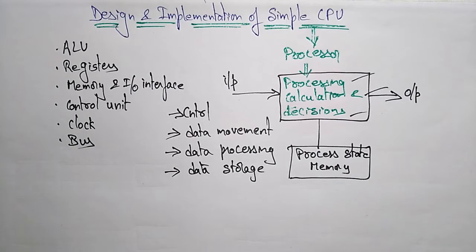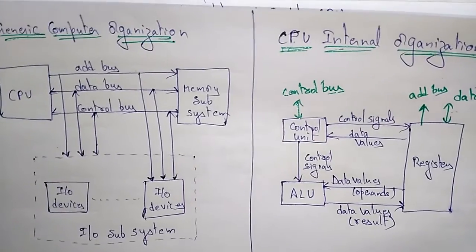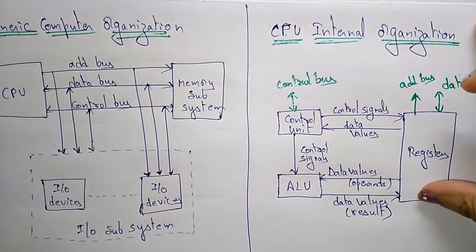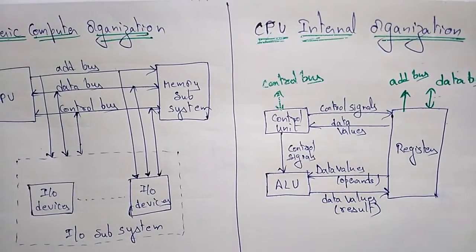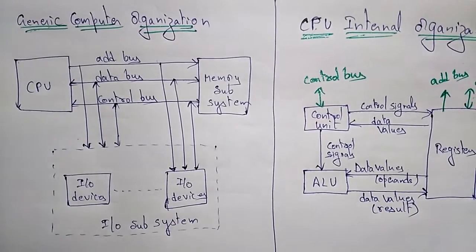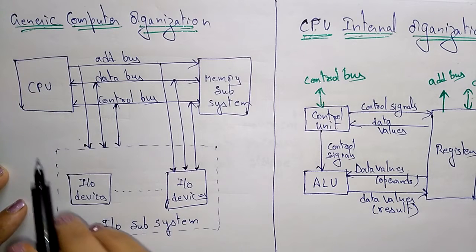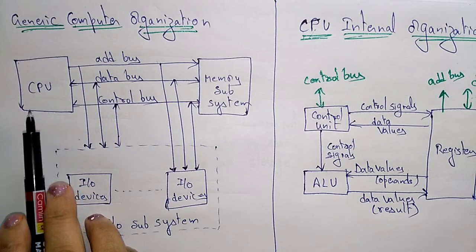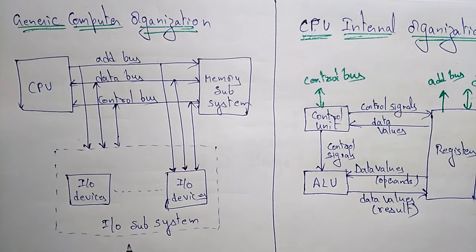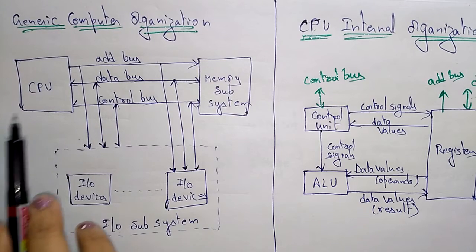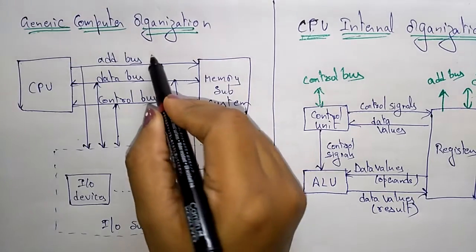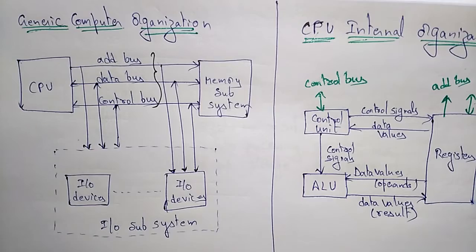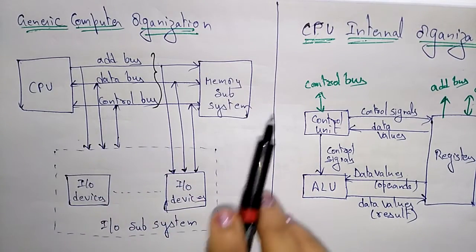That covers the basics of a simple central processing unit. Now let us look at the internal operations. In the generic computer organization, the CPU is connected to memory subsystems and IO subsystems. The system bus connects these components and consists of the address bus, data bus, and control bus. Signals are passed from one system to another through these buses.